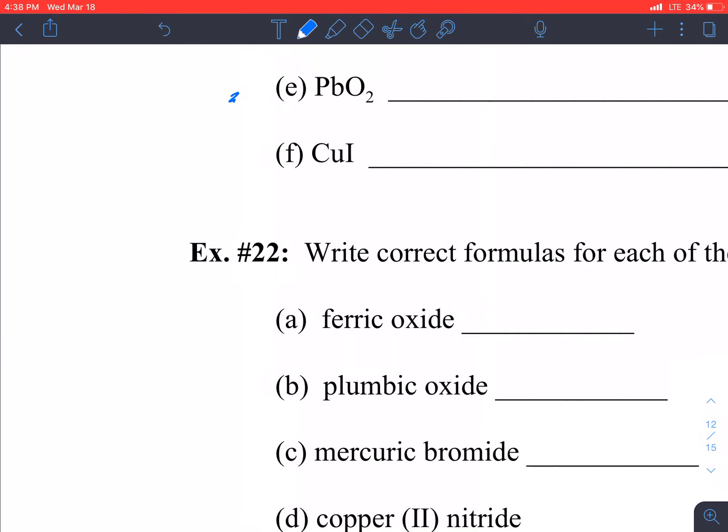So ferric oxide, think about the two ions individually. Ferric is the higher of the two, so Fe3+ oxide is O2-. And so if we crisscross or balance that charge out, we get a formula of Fe2O3.